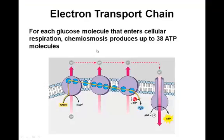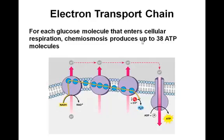That animation gives a different perspective on the electron transport chain. For each glucose molecule that enters cellular respiration, this chemiosmotic gradient can produce up to 38 ATP molecules per cell. This is an important number to remember — most textbooks will say 38 ATP molecules as a result of glucose being broken down completely through cellular respiration.